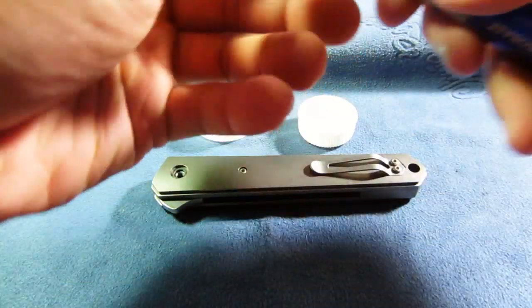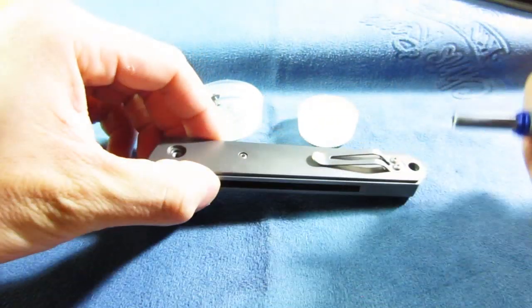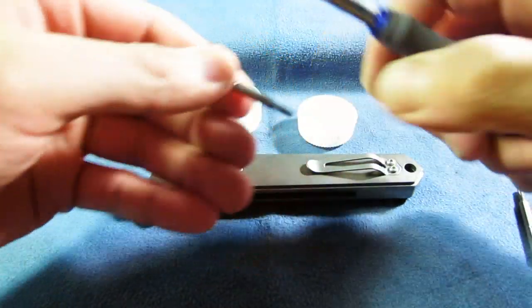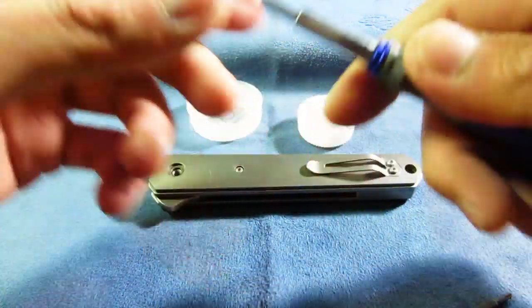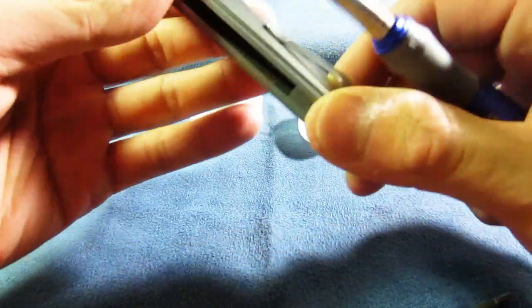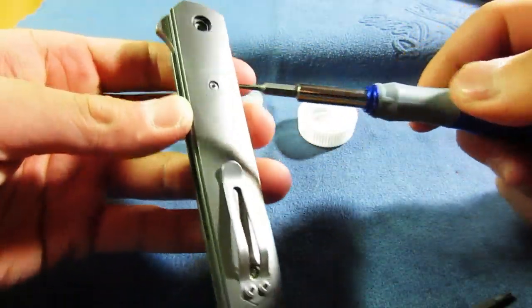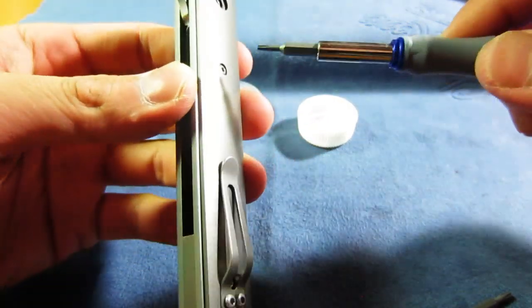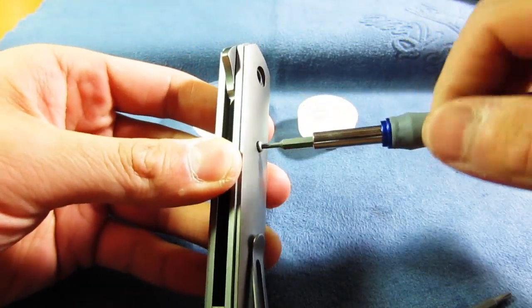If you guys have never taken a knife apart, especially one with IKBS, I would really approach with caution if you could say that, because the IKBS bearings are loose. I'm taking the scales off now and I think these hardware screws are a T6.